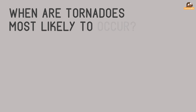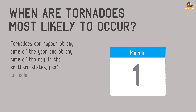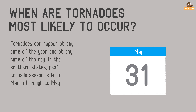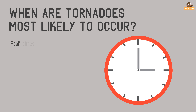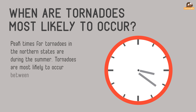When are tornadoes most likely to occur? Tornadoes can happen at any time of the year and any time of the day. In the southern states, peak tornado season is from March through to May. Peak times for tornadoes in the northern states are during summer. Tornadoes are most likely to occur between 3 p.m. and 9 p.m.